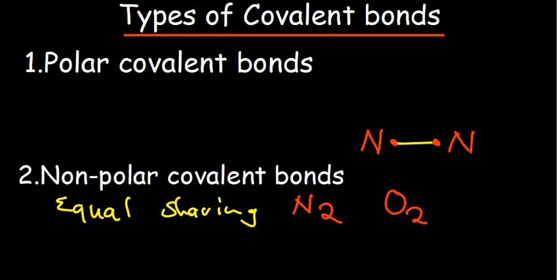There's an aspect of now looking at electronegativity, which basically determines whether it's going to be polar or non-polar. In a case where you talk about highly different electronegativity elements — for example, carbon and fluorine have got a high difference in terms of electronegativity — electrons tend to spend more time on fluorine. They've each contributed a single electron to the bond, but the electrons tend to spend more time around fluorine than carbon. That is what polar means.